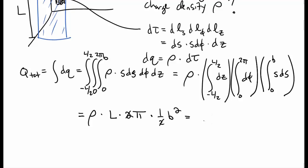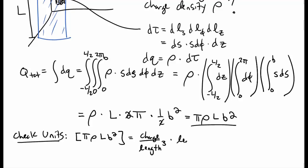Or the final result, we get rho times pi l b squared. Let's again check the units or the dimensions of this quantity. So, the dimensions of this final quantity, pi rho l b squared. Well, rho has units of charge per volume, which is charge per length cubed. Then we have a length, and then a length squared. All of the lengths cancel, so we're just left over with units of charge, as we should expect.